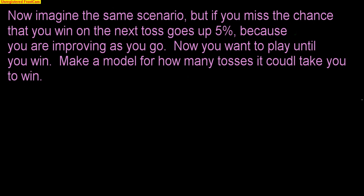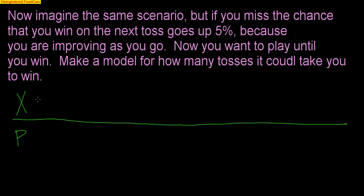Now let's switch it up. Imagine the same scenario, but if you miss, the chance that you win on the next toss goes up 5% because you are improving as you go. For example, if you miss the first time, you now have an 80% chance of winning on the second. You want to play until you win — this time ignoring the four-dart limit. Make a probability model for how many tosses it could take to win.